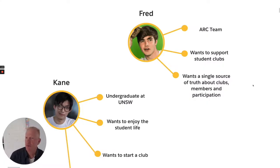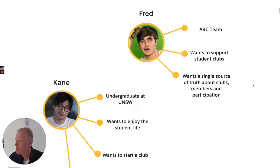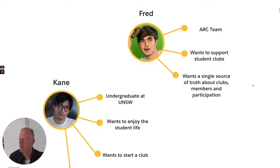Personas. Fred, a member of the ARC team, wants to support student clubs. He wants a single source of truth about clubs, members and participation. We also see Cain, an undergraduate student at New South Wales. He wants to enjoy student life and is thinking about starting a club.